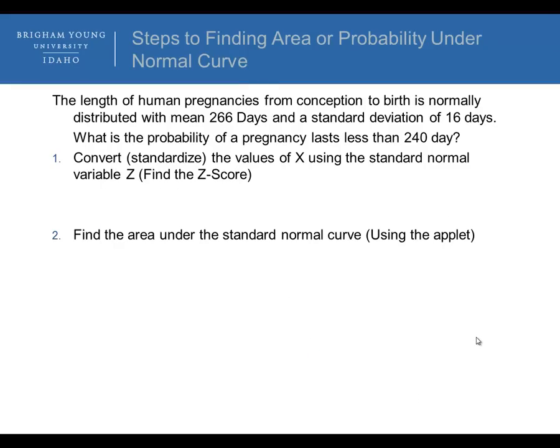Now we'll go through these two steps with a couple of examples. The length of a human pregnancy from conception to birth is normally distributed with a mean of 266 days and a standard deviation of 16 days. What's the probability that a pregnancy lasts less than 240 days? Let's go through these two steps. We want to get the z-score for this x, which is 240. So we take 240 minus the mean, which is 266, divided by the standard deviation, which is 16 days. When we solve for the z-score, we get a z-score of negative 1.625.